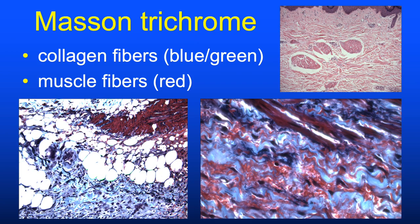The Masson trichrome helps distinguish collagen fibers from muscle fibers as may be encountered in the dermis. Conveniently, collagen is blue-green and muscle fibers stain red. In practice, I order this stain about once every five years, usually just for teaching purposes.